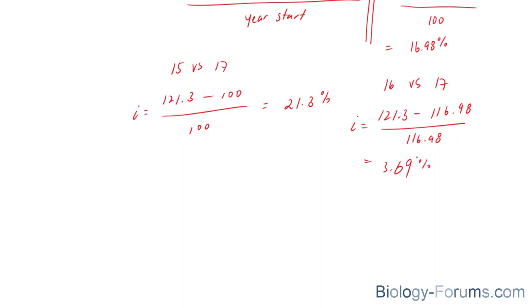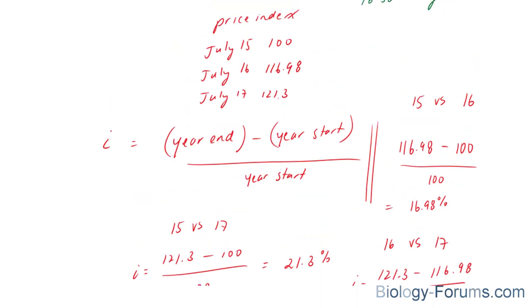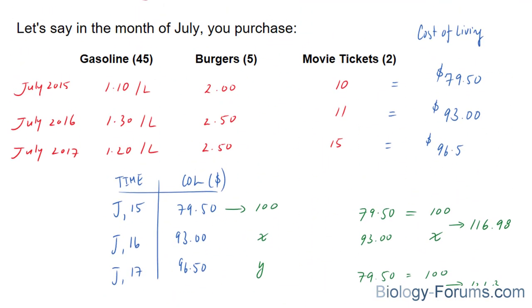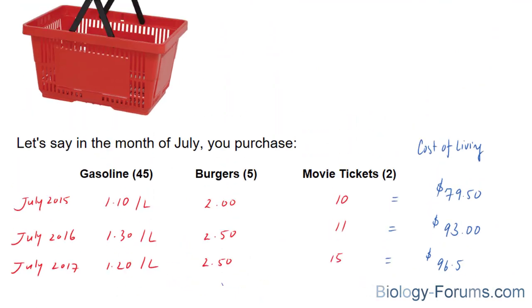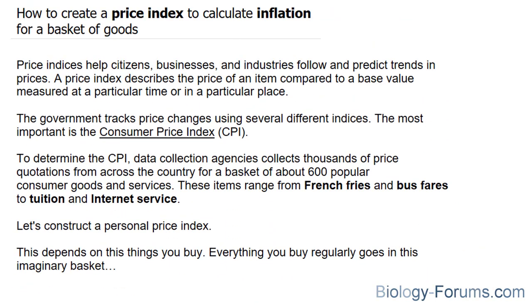So there you have it. That is how to construct a price index using a basket of goods and then subsequently using that information to come up with the inflation for every year. If you found this tutorial helpful, please support our channel by subscribing or by liking this video. If you have any further questions, you may visit our website at biology-forums.com. We are an online service for students seeking free homework help. See you soon.